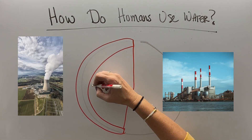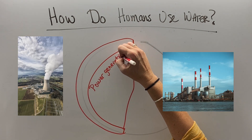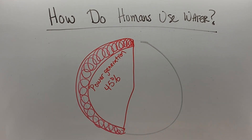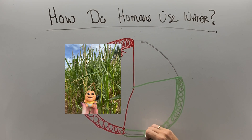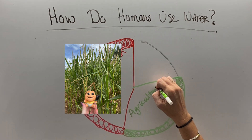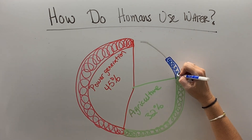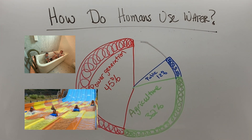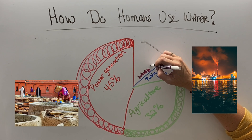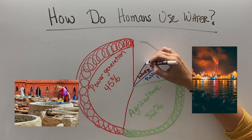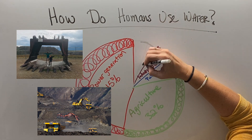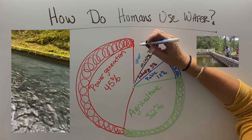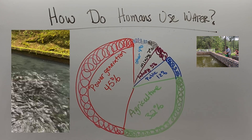So how do we use this water? The largest proportion is actually electricity generation — 45% of all our water use is in coal and nuclear plants to make electricity. Then 32% is used to grow all of our food through agriculture. 12% is what we use to drink and flush our toilets and things like that. Industry to run factories is 5%, mining uses 2%, and there are other things like growing fish that use the remaining percentage.